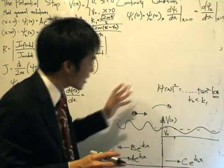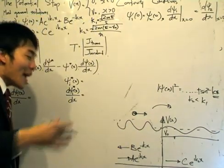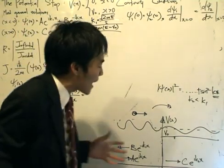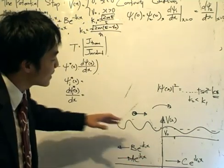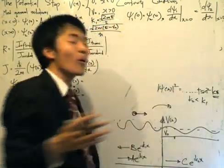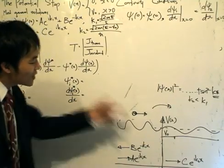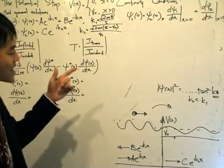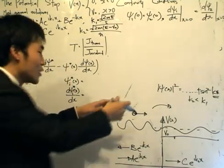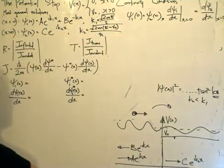That is all you need to know for sketching the probability densities. One important thing to note is that we cannot normalize these probability densities — the area is infinite. For the vocabulary, we describe this as a continuous solution with a continuous energy spectrum.